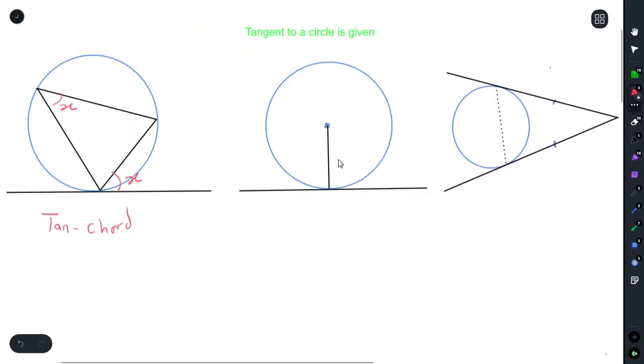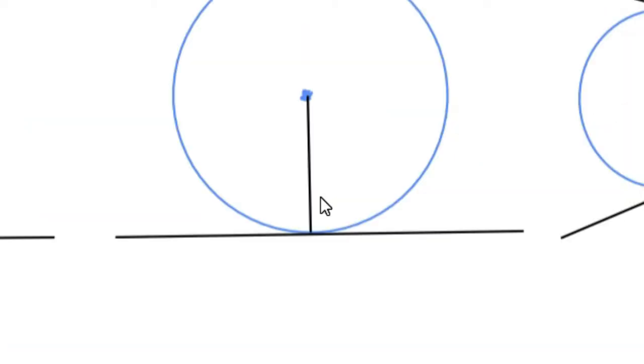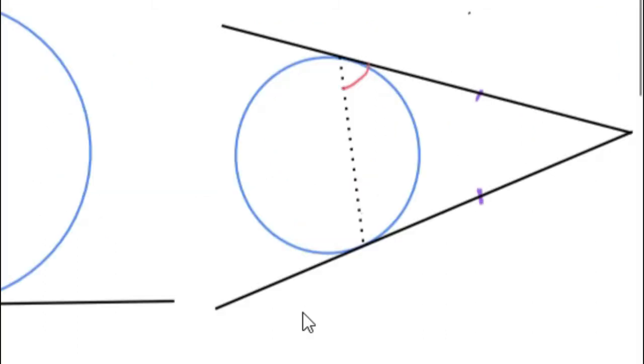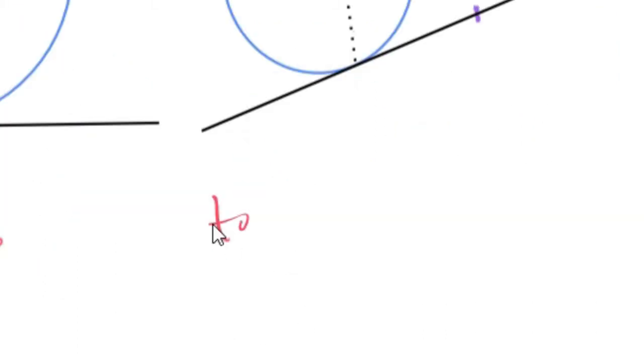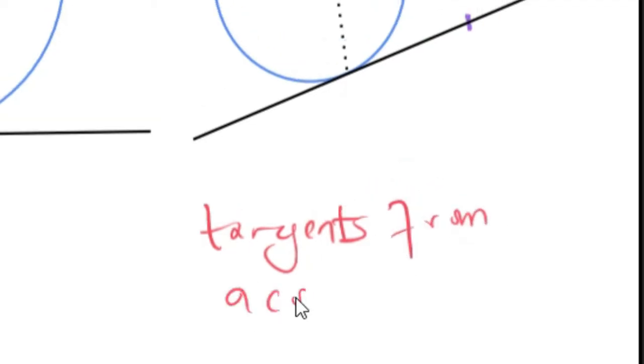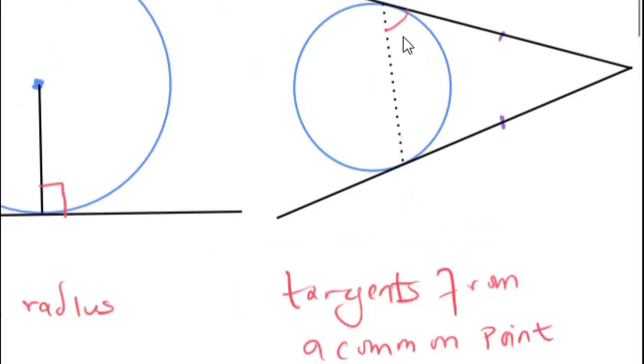We could also have the radius perpendicular to tangent theorem, which means that the angle between a radius and a tangent is always at 90 degrees. The last theorem in which we have tangents are tangents from a common point, whereby we say that the angle that we have here will be equal to the angle that we have here.